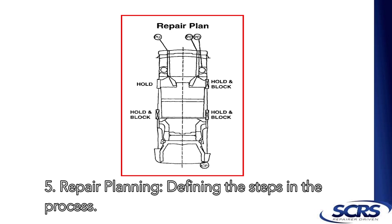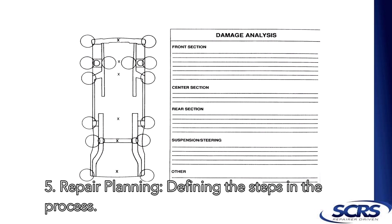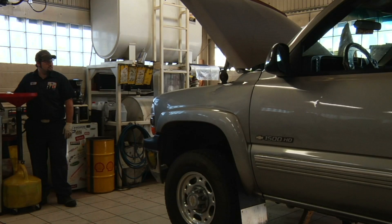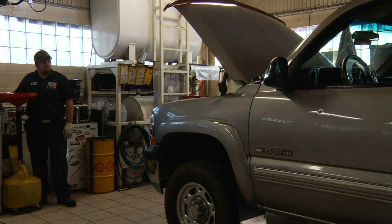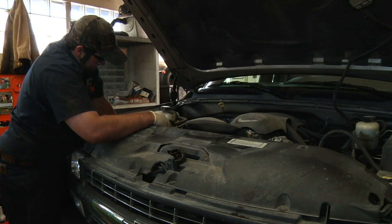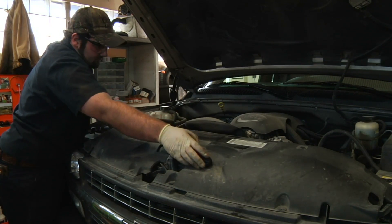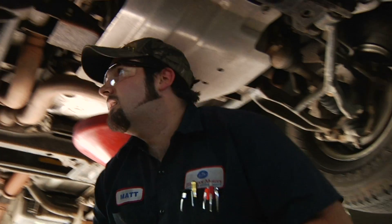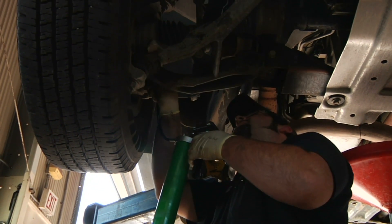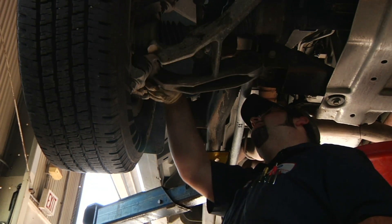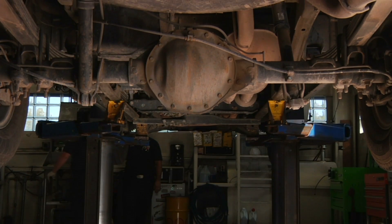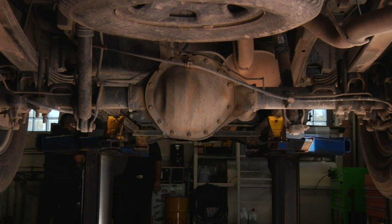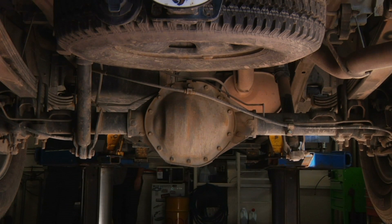Step 5: Repair planning — defining the steps in the process. With each vehicle, the repairer will need to create a repair plan that can show technicians and customers where the damage is and how each problem can be addressed and corrected. As repairers, we are tasked with the proper repair of each vehicle within our facility. When combining the differences in vehicle design and materials by model and the variances in collision types, it is unreasonable to think that a set of predetermined values or times outlined by insurance companies or any other third-party provider can be accurate.